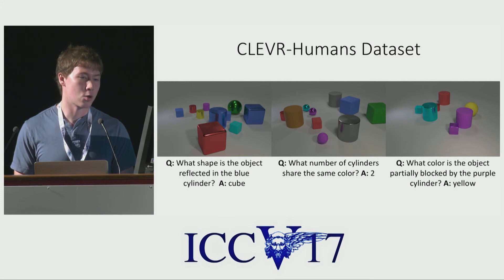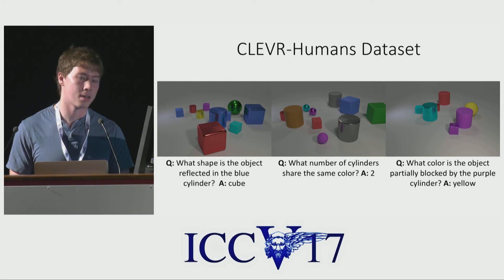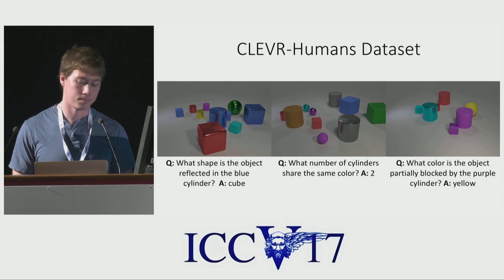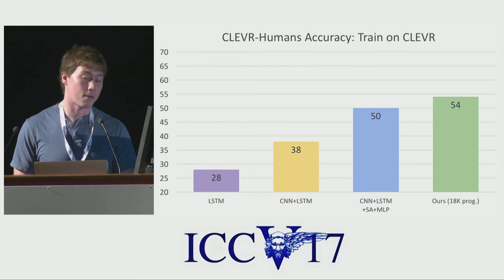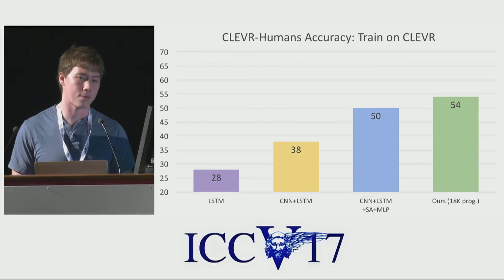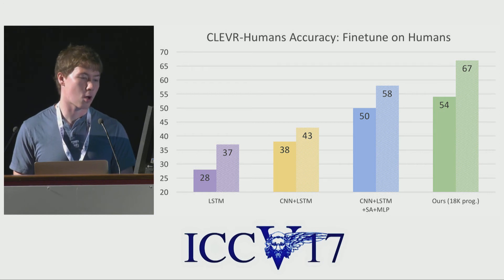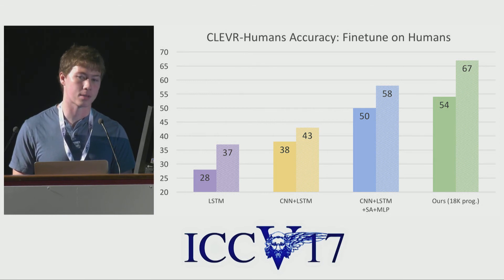To this end, we collected the new CLEVR-Humans dataset, where we asked workers on Mechanical Turk to write natural language questions about images from the CLEVR dataset. These questions ask about a lot of different types of things that never showed up in the CLEVR training set — for example, shapes reflected in the blue cylinder, something the CLEVR dataset never asked about. When we train different models on the CLEVR dataset and evaluate directly on CLEVR-Humans, our model, trained with just 18,000 programs from CLEVR and no programs from CLEVR-Humans, outperforms all models by a slight margin. However, when we fine-tune the models on the CLEVR-Humans dataset, we achieve quite a healthy performance increase over all previous methods. And again, in this joint fine-tuning process, our model observes no programs on the CLEVR-Humans dataset.